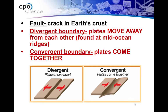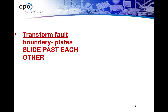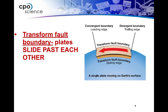If something converges, it comes together. So at convergent plate boundaries, plates come together. At transform fault boundaries, plates are going to slide past each other. Almost imagine you put your hands together like you're going to warm them up, and then you slide them past each other — that's what's happening at a transform plate boundary.